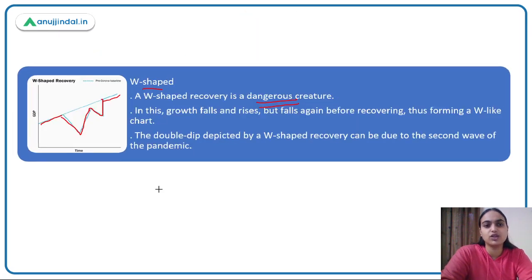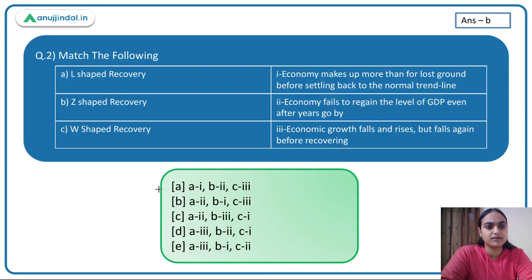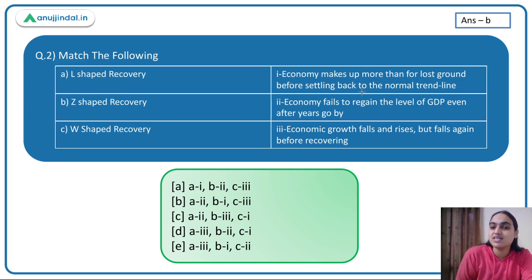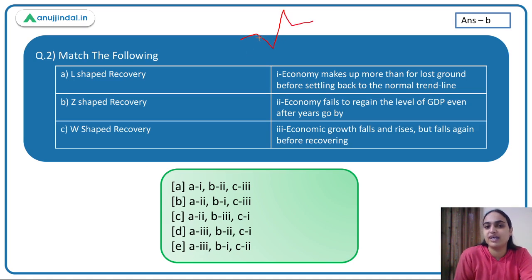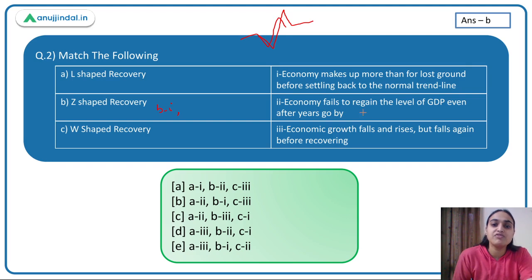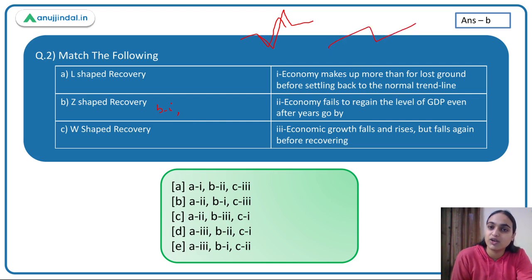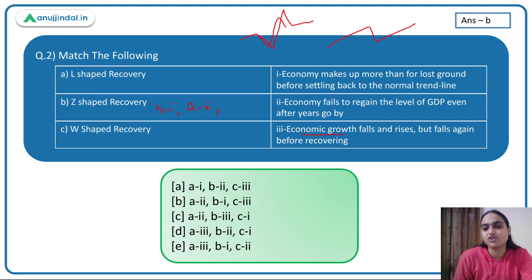Moving on to the second question on economic recovery: match the following — L-shape, Z-shape, and W-shape recovery. The economy makes up more than the lost ground before settling back to the normal trend — that is Z-shape, so B matches first. Economy fails to regain the level of GDP even after years go by — that is L-shape, so A is second. W-shape: economic growth falls, rises, but falls again before recovering — so C is third. The answer is option B: A-second, B-first, C-third.